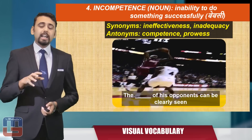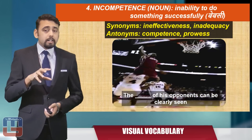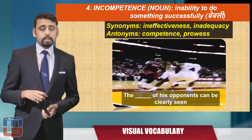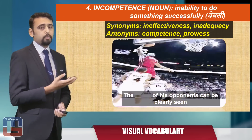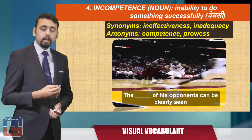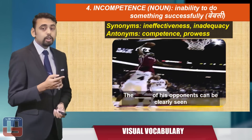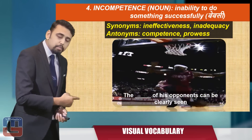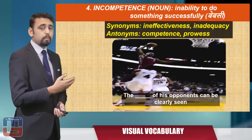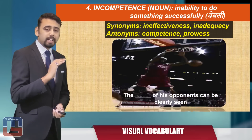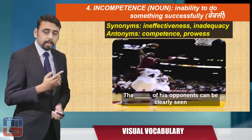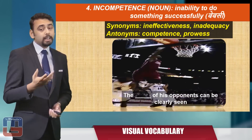The synonyms of 'incompetence' are 'ineffectiveness' or 'inadequacy,' and the antonyms are 'competence' or 'prowess.' There's an image of a superb basketball player making a basket while opponents try to stop him. The sentence: 'The blank space of his opponents can be clearly seen.' The opponents are helpless and can't stop him scoring. The answer: 'The incompetence of his opponents can be clearly seen.'